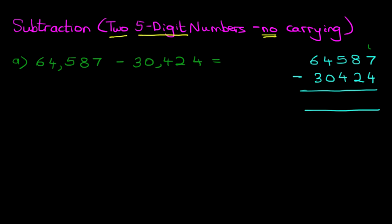Let's label the columns. We have units, tens, hundreds, thousands and TTH for ten thousands. We are ready to do the subtraction. Starting on the right hand side we have 7-4. 7-4 is 3.